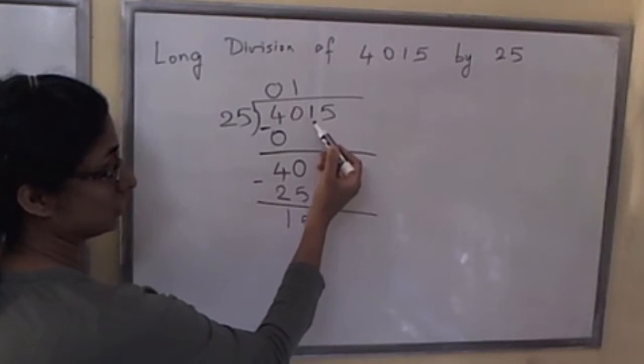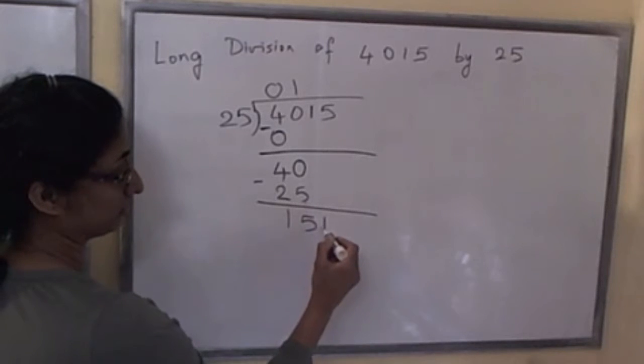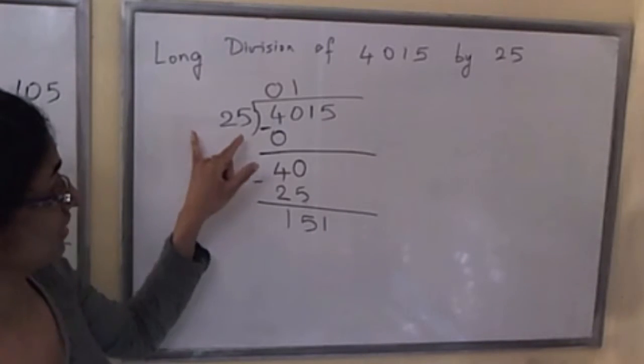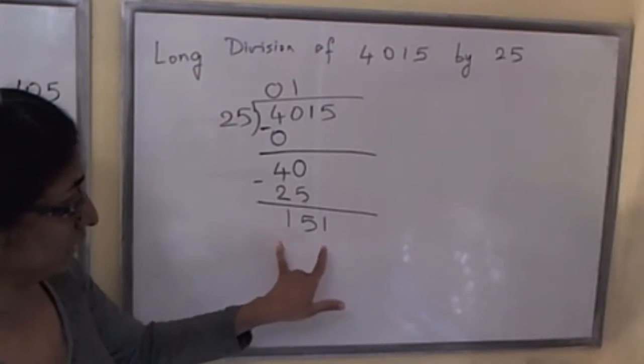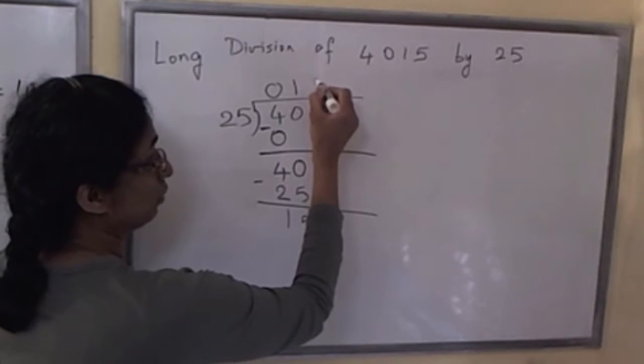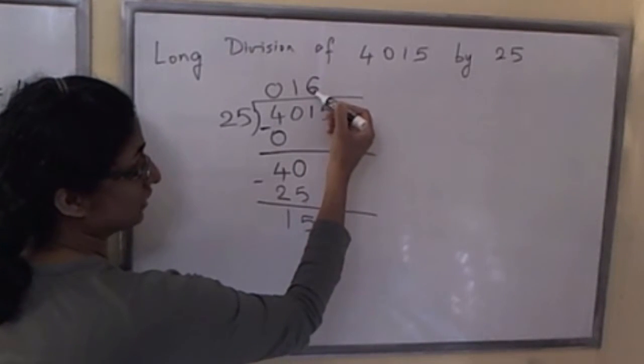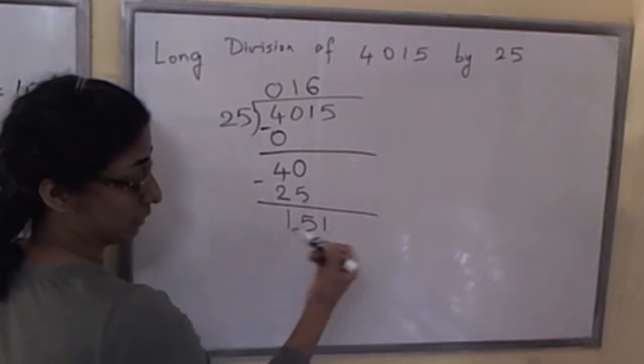And now we bring down the next digit, which is 1. So we ask: what is the maximum copies of 25 in 151? That would be 6. We put 6 in the same column as the 1 that we brought down.